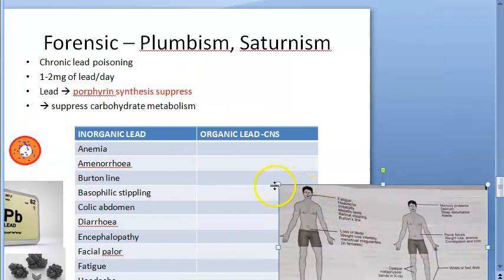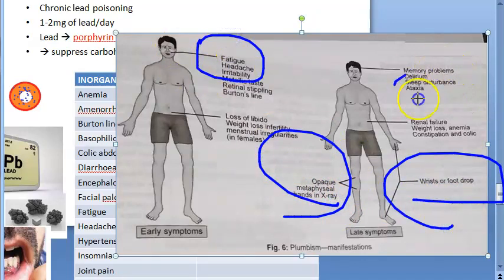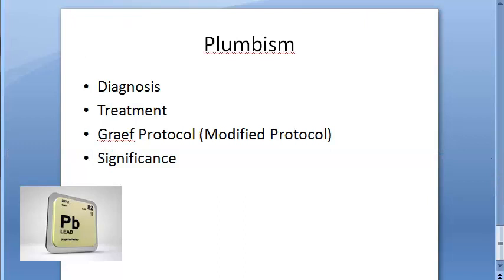Other specific things you saw were like metaphyseal bands in x-ray, wrist drop, foot drop. You saw a lot of CNS symptoms and loss of libido, menstrual irregularities, infertility. All those symptoms you have seen.